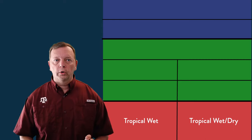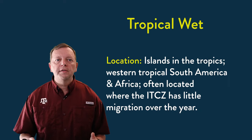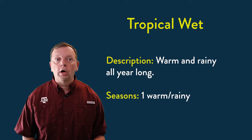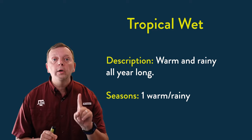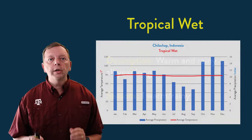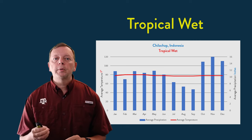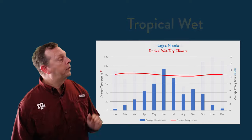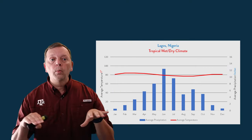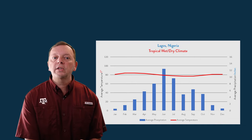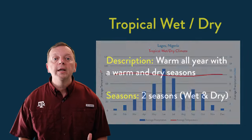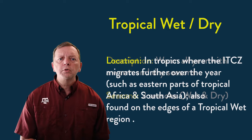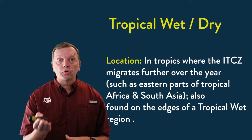Both of these climates are warm all year long. Tropical wet climates are often found in the islands and the tropics where the ITCZ doesn't move very much throughout the year, creating rains all year long — so a tropical wet climate really only has one warm, rainy season. Tropical wet dry is generally found where the ITCZ moves much more north and south throughout the year, creating those dry and wet seasons.